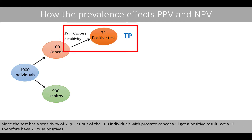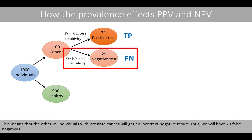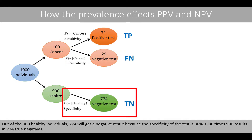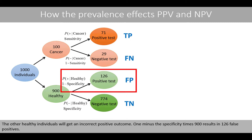Since the test has a sensitivity of 71%, 71 out of the 100 individuals with prostate cancer will get a positive result — we will therefore have 71 true positives. The other 29 individuals with prostate cancer will get an incorrect negative result, giving us 29 false negatives. Out of the 900 healthy individuals, 774 will get a negative result because 0.86 times 900 equals 774 true negatives. The remaining healthy individuals will get an incorrect positive outcome: (1 minus specificity) times 900 gives 126 false positives.